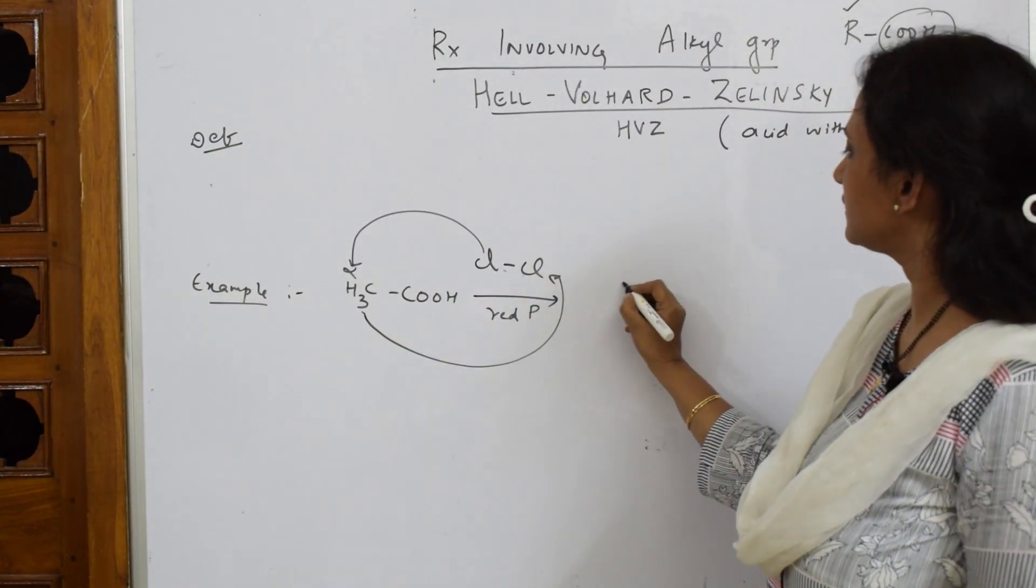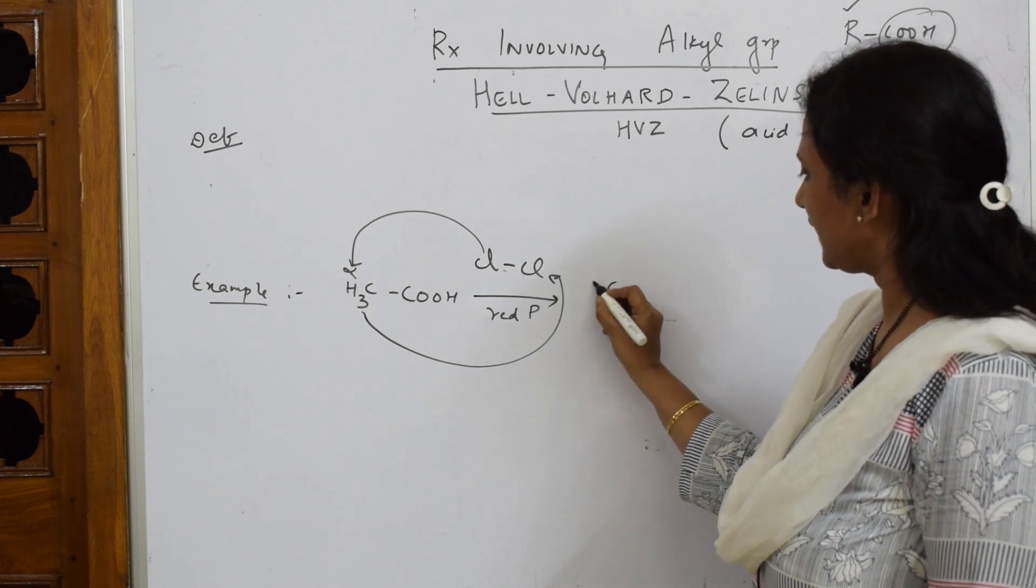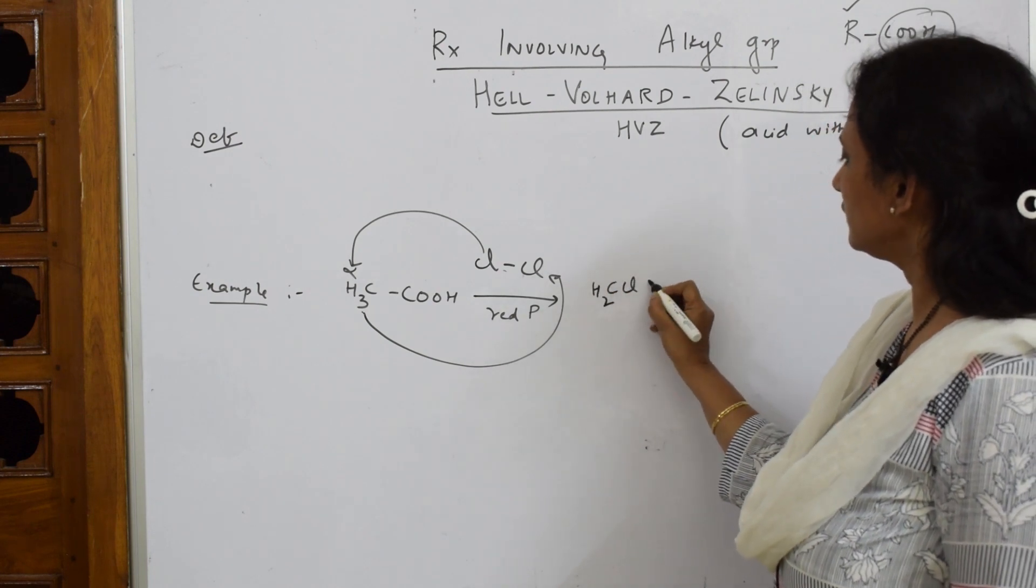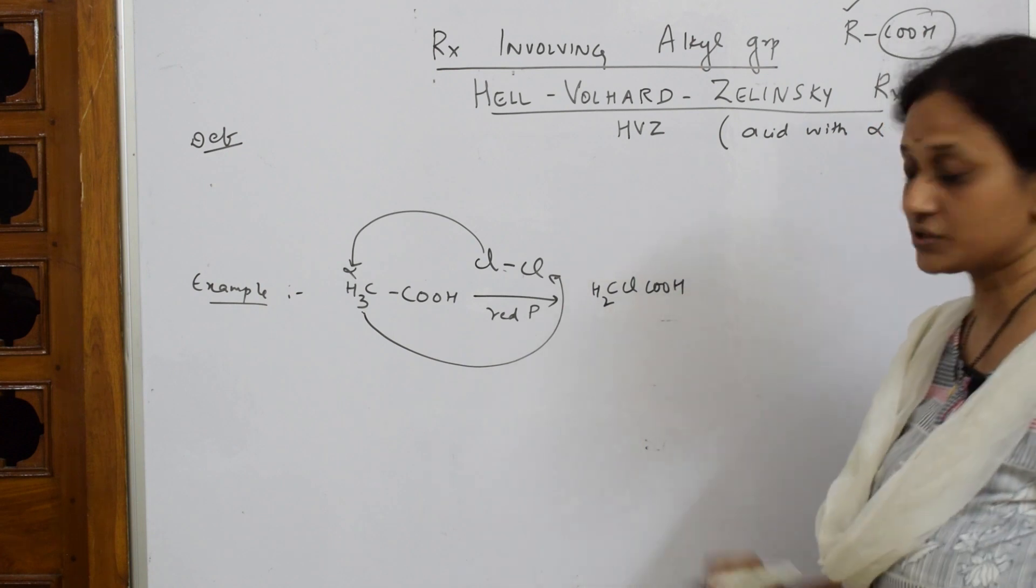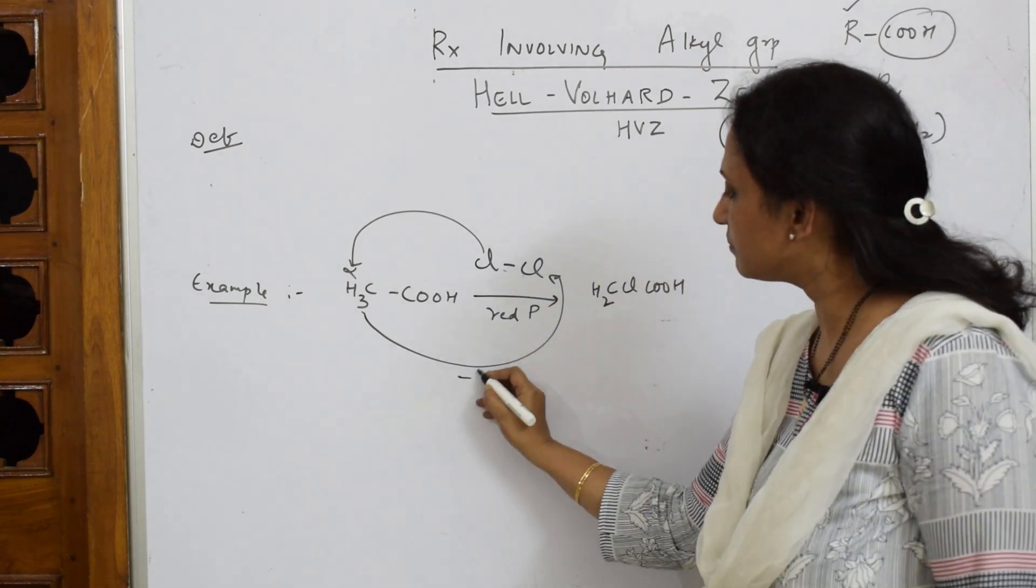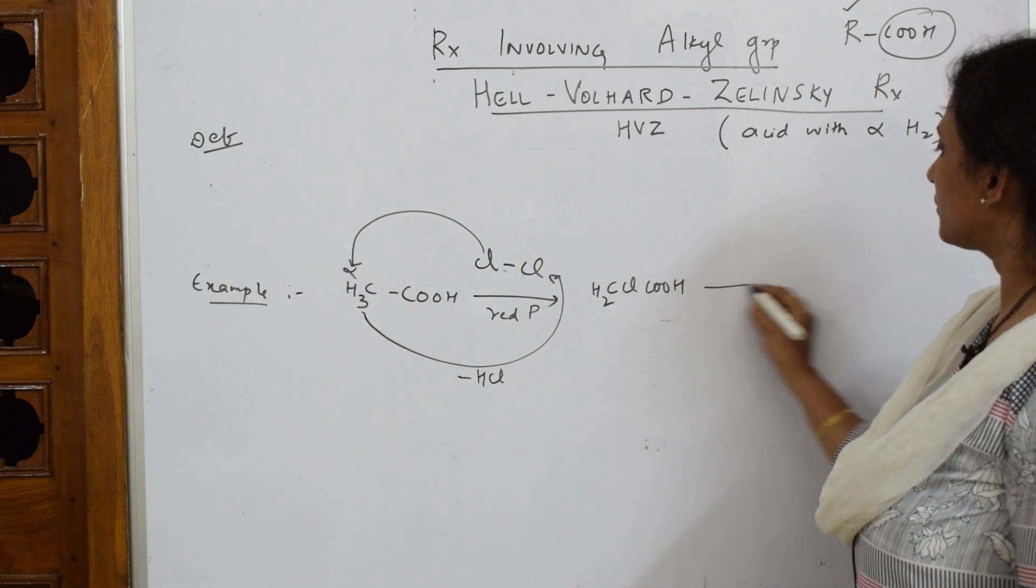What do I get in step one? So one chlorine has gone inside, this becomes CH2Cl and COOH. What has come out? Always minus HCl, one HCl has come out.